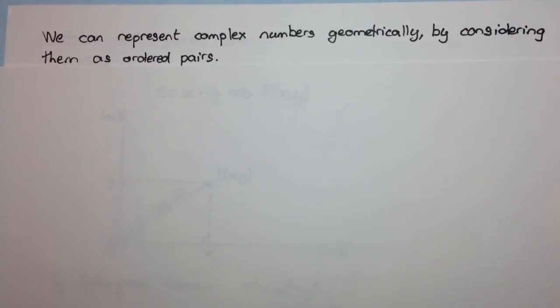Okay, so let's have a look. In earlier videos, we've been looking at complex numbers and some properties, and we've been considering them algebraically. Now, we can represent complex numbers geometrically by considering them as ordered pairs.